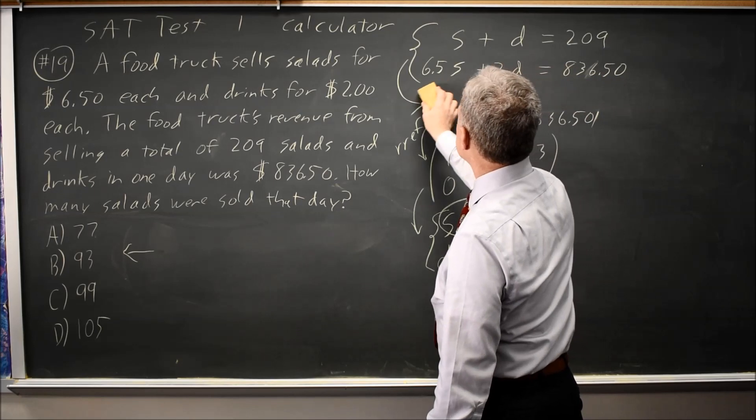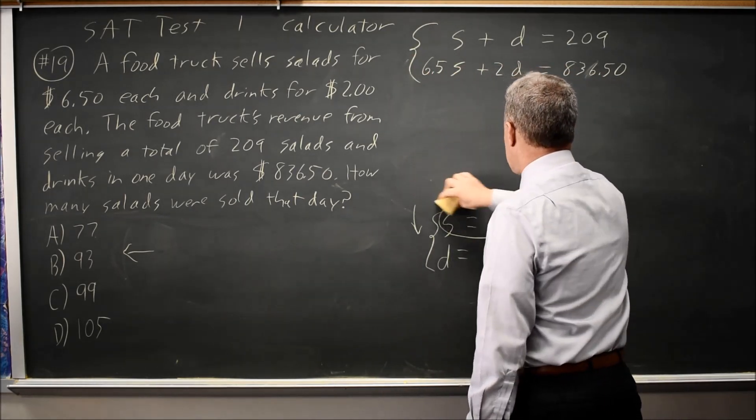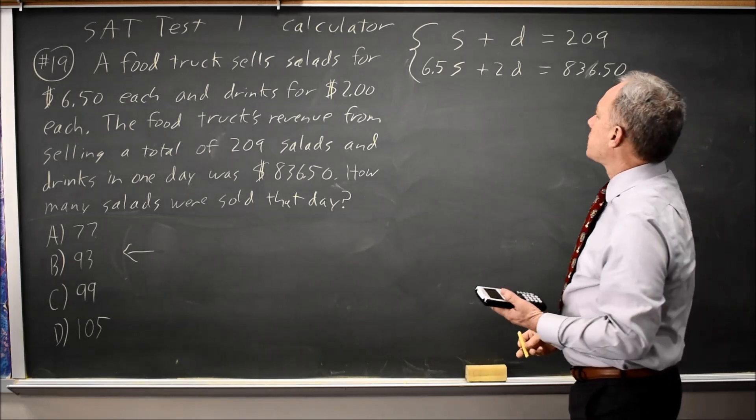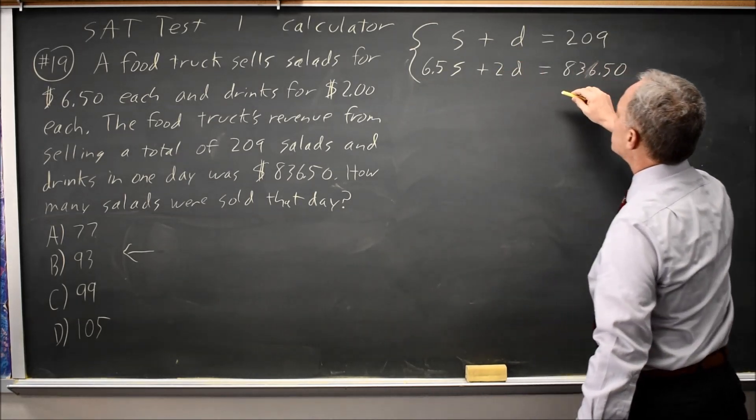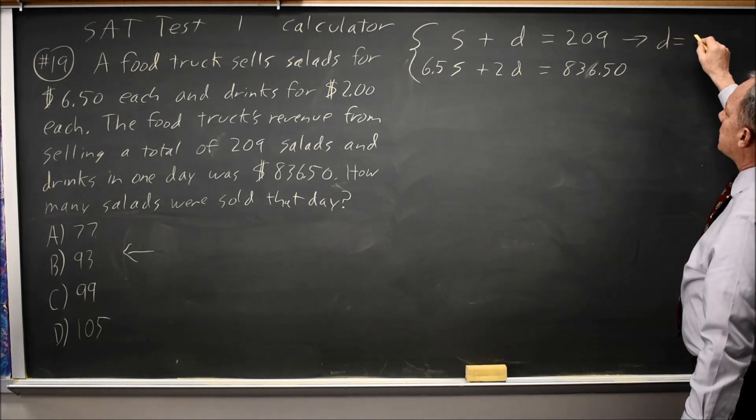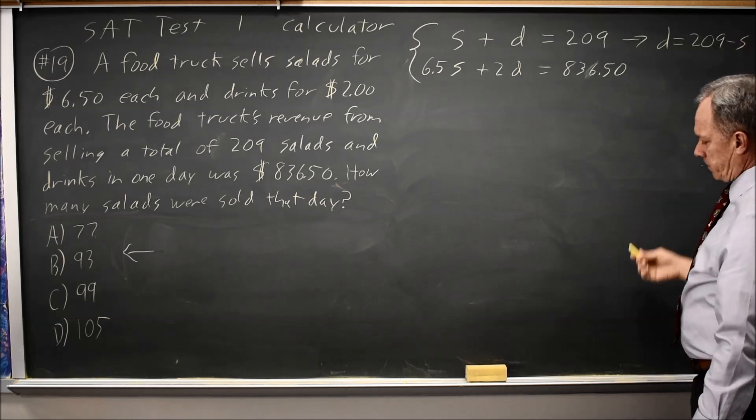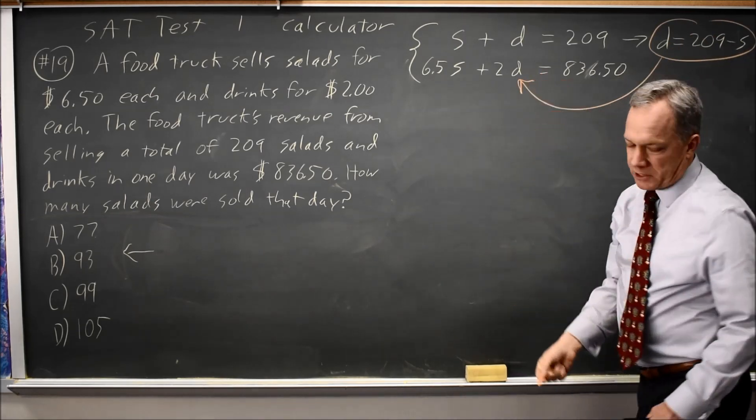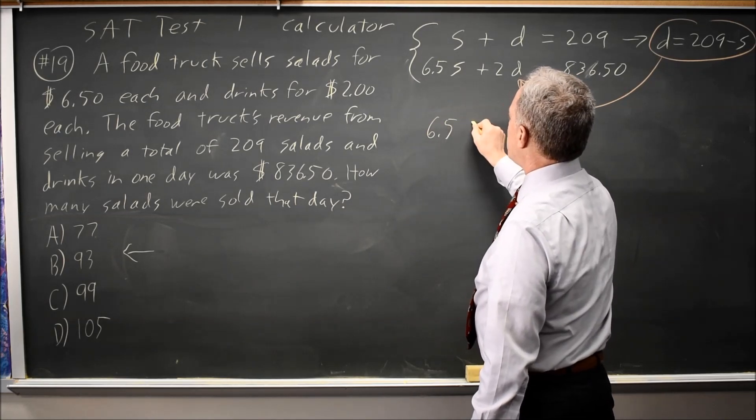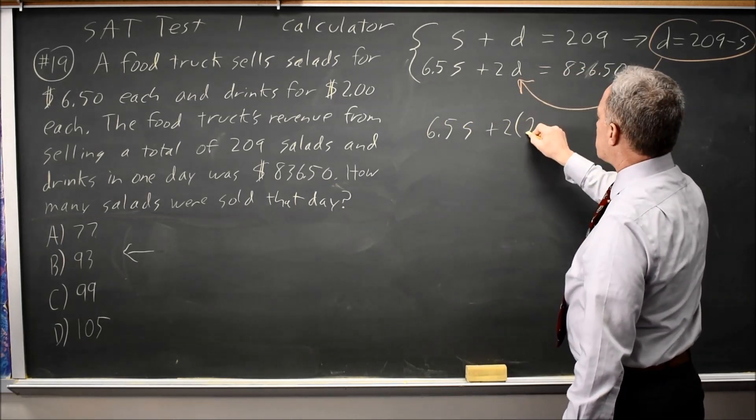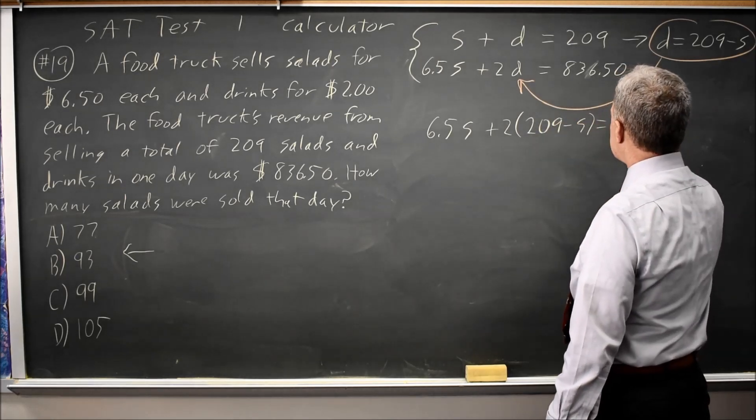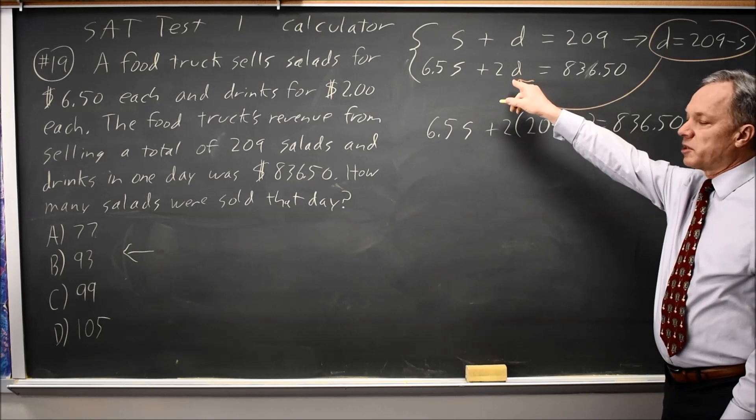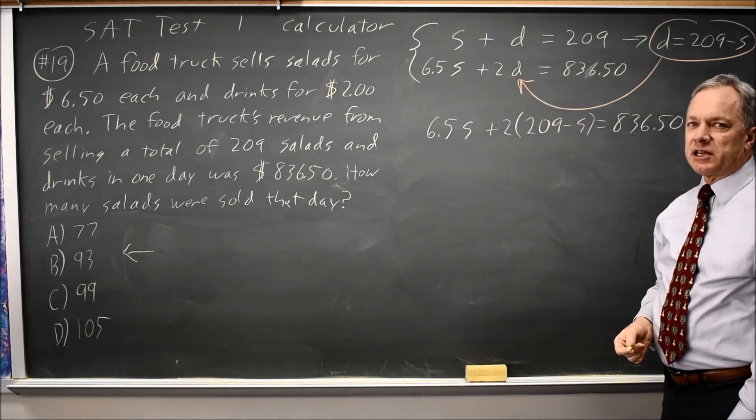Let's try another method. And again, this is a calculator question. I'm going to take the second equation and solve for D. If I subtract S from both sides, I get D equals 209 minus S. I can substitute that in for D in the second equation and get 6.5S plus twice the expression that equals D equals 836.50. And I solved for D because then I can substitute in for D and eliminate D, and the only variable I have is S, which is what they're asking for.